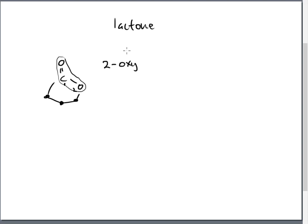So it's always a two-oxy something. Well, two-oxy what? It's a ring. How do you name rings? Back in 251 we put the word 'cyclo' in front — we do the same thing here. So it's two-oxy-cyclo-something.